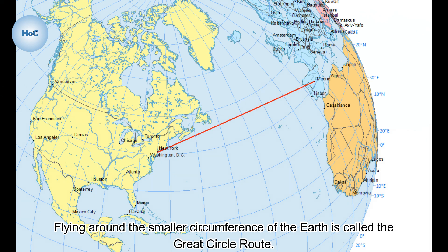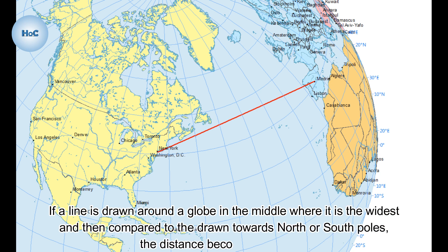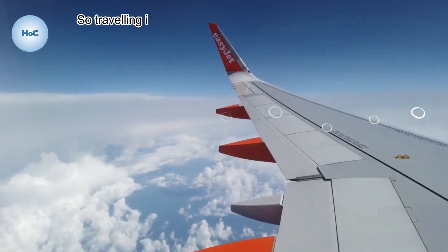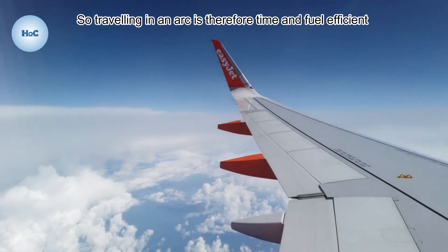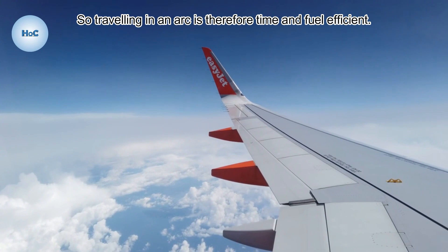Flying around the smaller circumference of the Earth is called the Great Circle Route. If a line is drawn around a globe in the middle where it is the widest and then compared to lines drawn towards the north or south poles, the distance difference becomes apparent. So traveling in an arc is therefore time and fuel efficient.